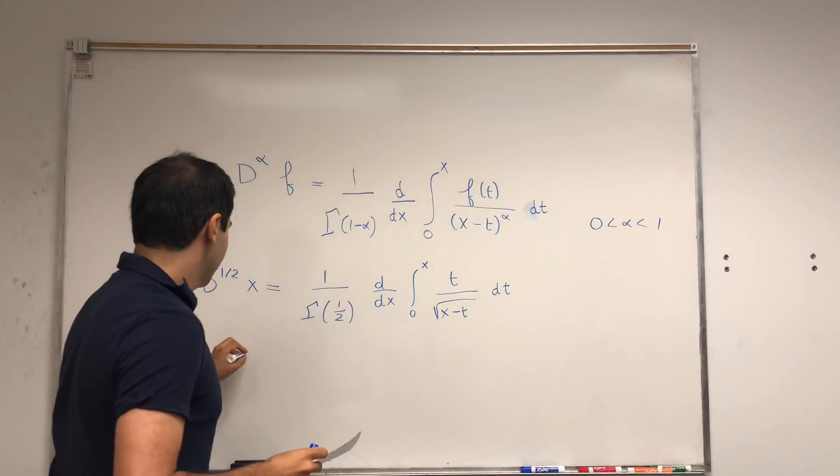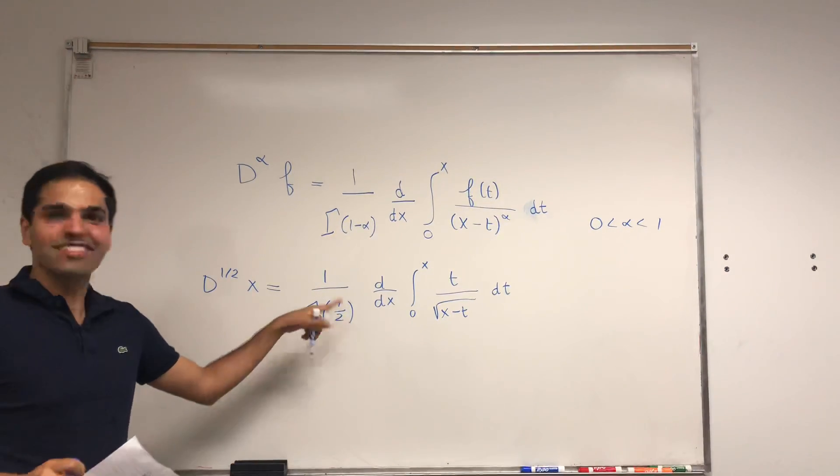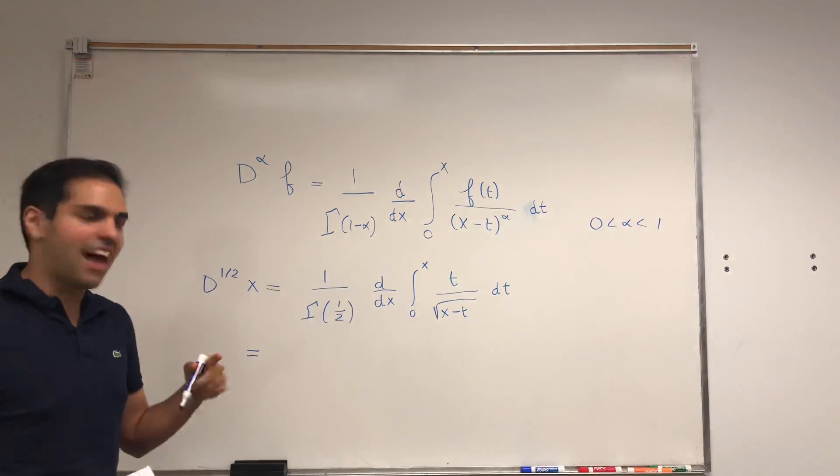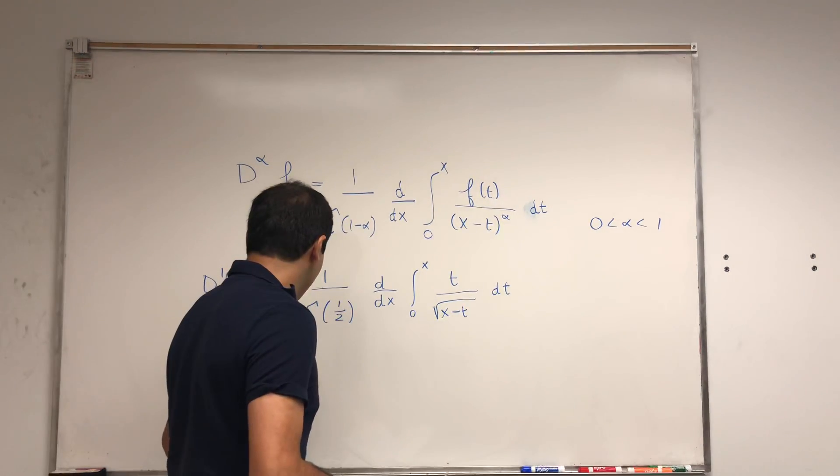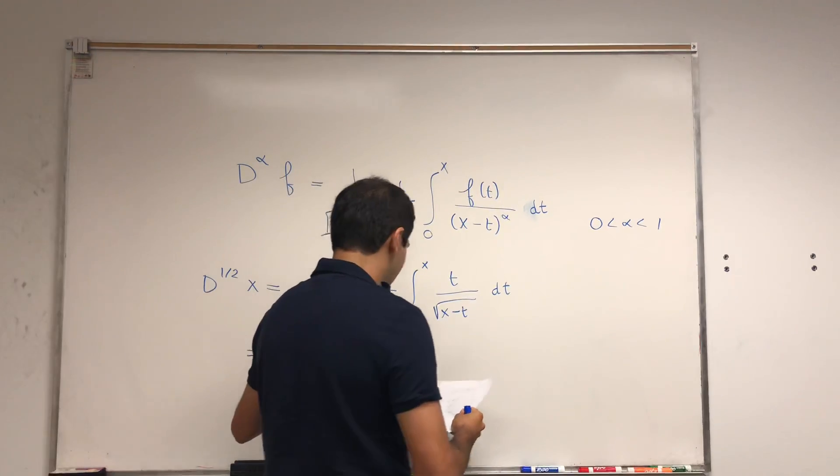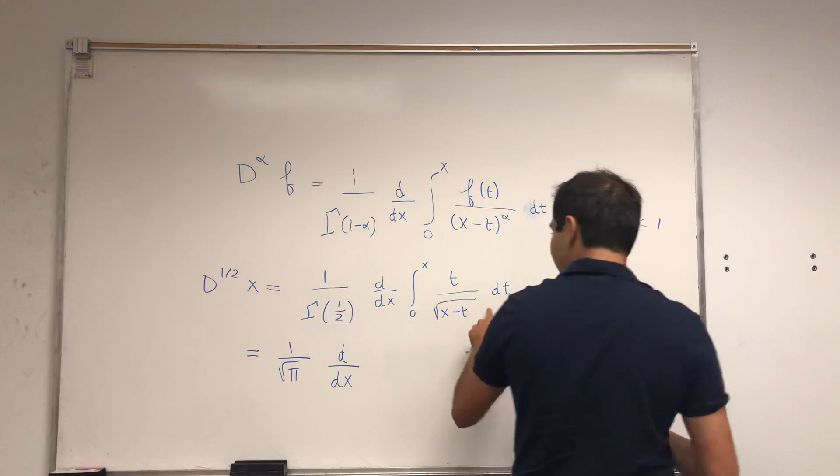We get that. First of all, this constant I evaluated in the half derivative video. It equals one over square root of pi, and then d over dx.